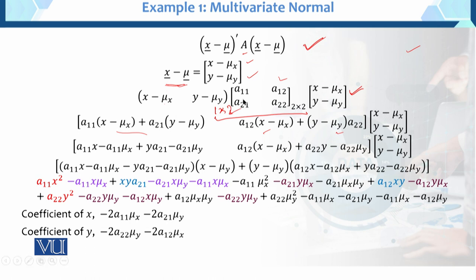After solving the first two terms, we multiply out the full calculation. We now have order 1×2 times 2×1, giving a final order of 1×1 — a scalar. The full row times column multiplication gives us the complete expanded quadratic expression.